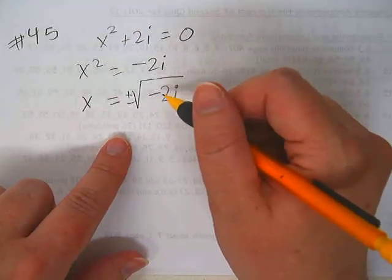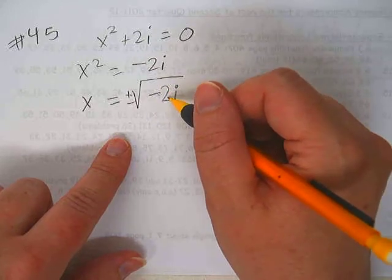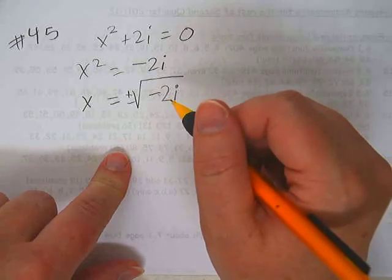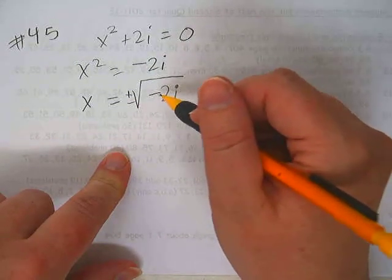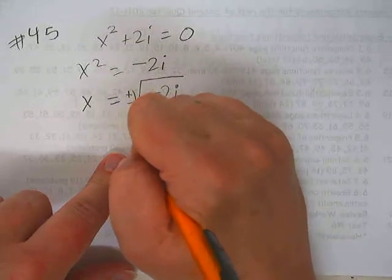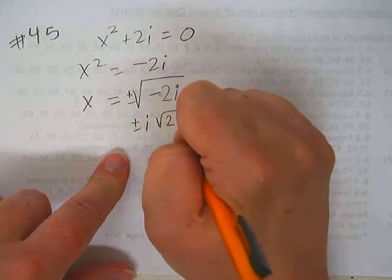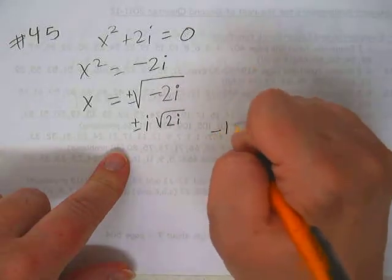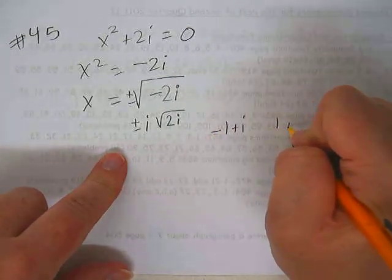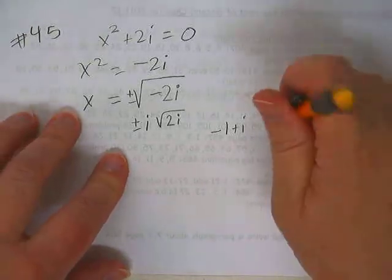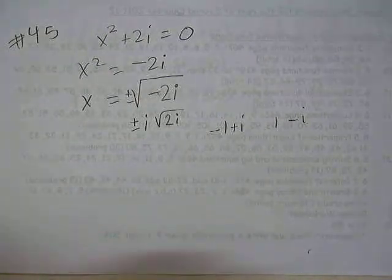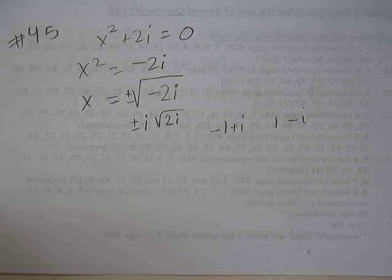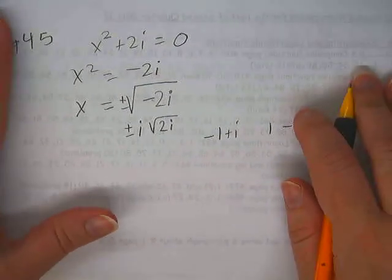Wait, can we do plus or minus? I wonder if we even need to use the formula on this one. I don't know. Let's see. So what is the square root of negative 2? I don't think this is going to give us the right answers. So we would have plus or minus i square root of 2i. The answers in the book are negative 1 plus i and 1 minus i. So I'm not sure how to get to that from that.